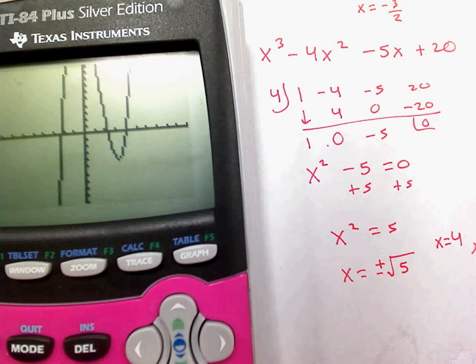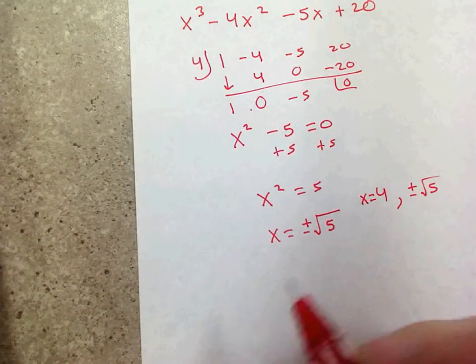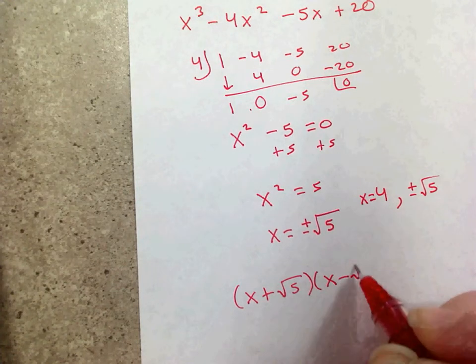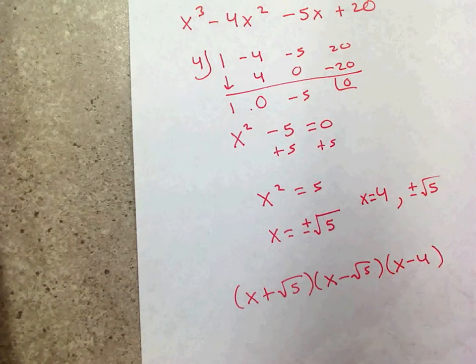Which lets me know that my three answers are 4, and then plus and minus the square root of 5. So, if I wanted to write this in factor form, then I would say x plus the square root of 5, x minus the square root of 5, and then x minus 4.